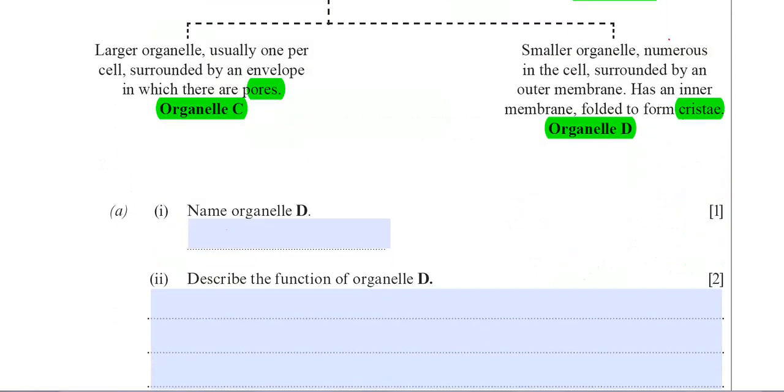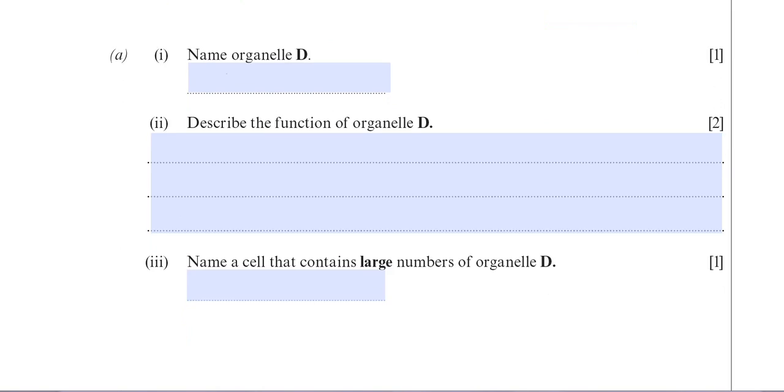Firstly you're asked to name organelle D. As I've already said, organelle D is a mitochondria because of its inner folded cristae. So the answer to part A1 is the mitochondria. There you go, so the answer.